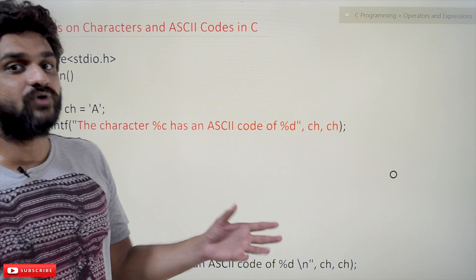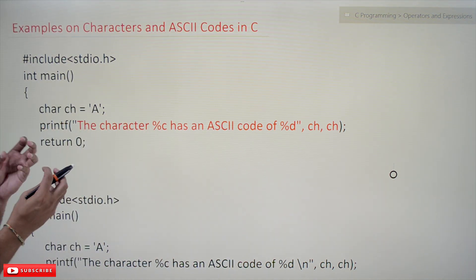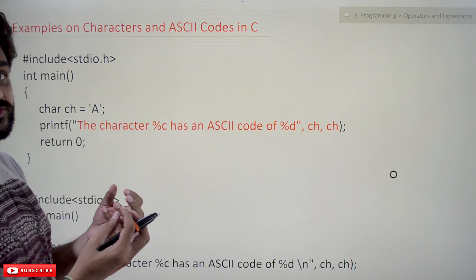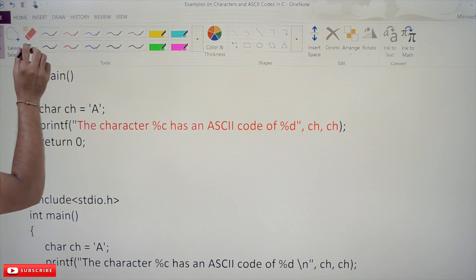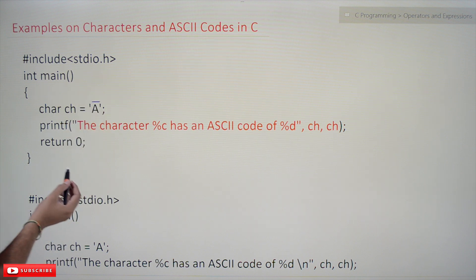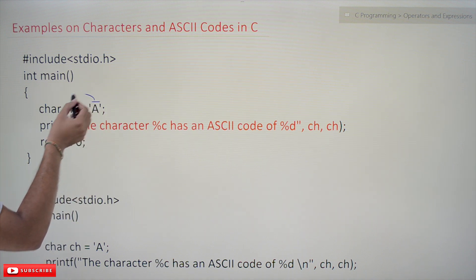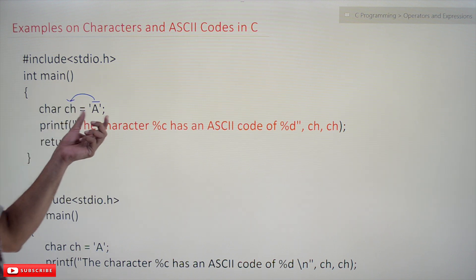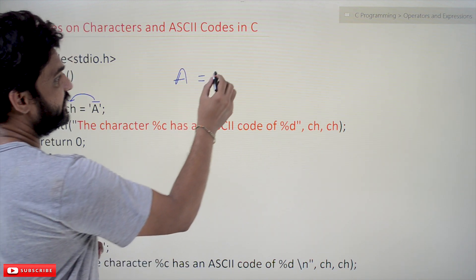The link for the playlist is provided in the description below. Let's try to understand the examples on characters and ASCII codes. Characters and ASCII codes are used interchangeably, so we'll understand that concept by using examples. Here we have declared a character, and the character is 'A', and it is assigned to CH.